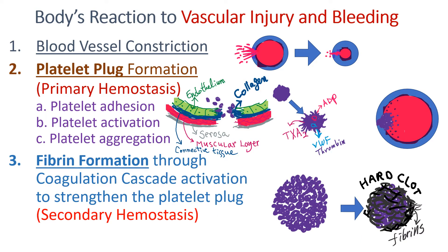When vascular injury occurs and bleeding starts, blood vessels immediately constrict to decrease the blood flow and limit the blood loss. Then a platelet plug is formed to plug the hole at the bleeding site through three steps: platelet adhesion, platelet activation, and platelet aggregation. Platelet adhesion involves the platelets adhering to the collagen in the subendothelium.